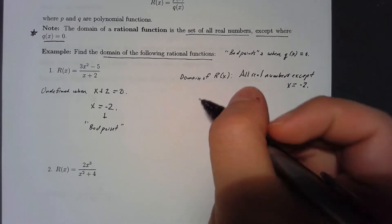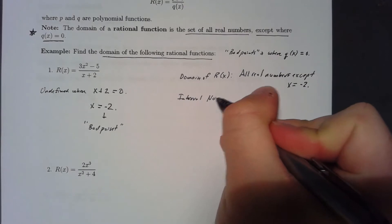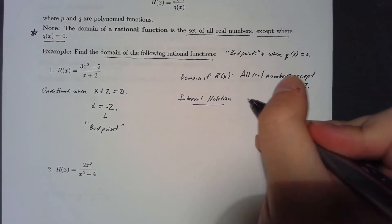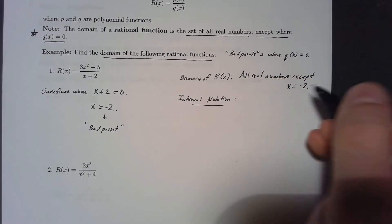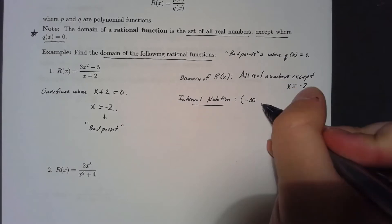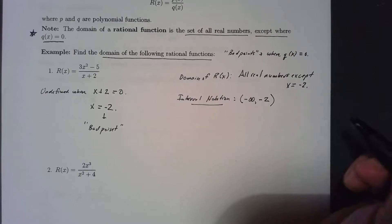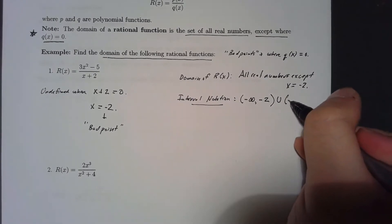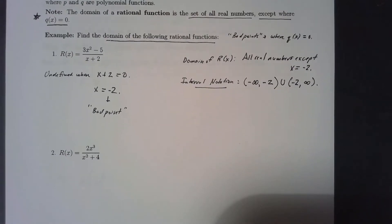In interval notation, everything except -2 would be written as negative infinity to -2 (open interval) union -2 to positive infinity. That's the domain of r(x) in interval notation.